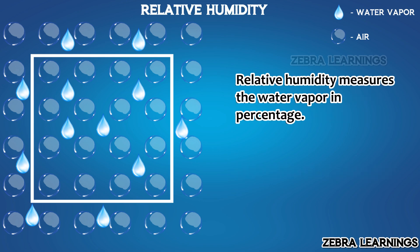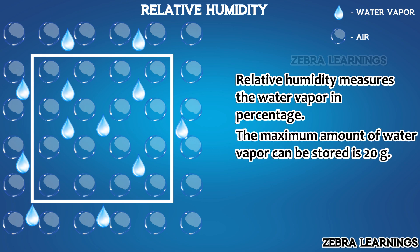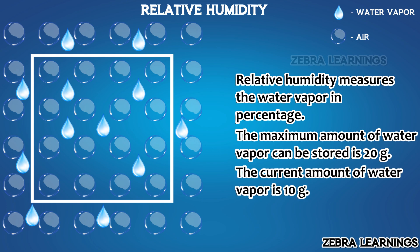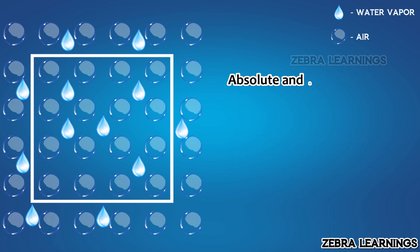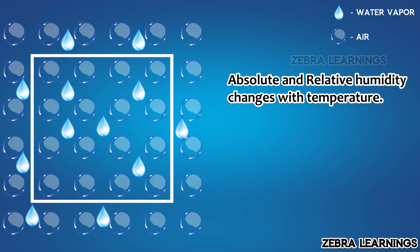Relative humidity measures, as a percentage, how much water vapor is currently present in the air compared to the maximum amount of water vapor the air could hold at that temperature. Let's assume the maximum amount of water vapor that can be stored in this one cubic meter area is 20 grams, but currently it holds only 10 grams. When we measure this as a percentage, the relative humidity value comes out to be 50%.